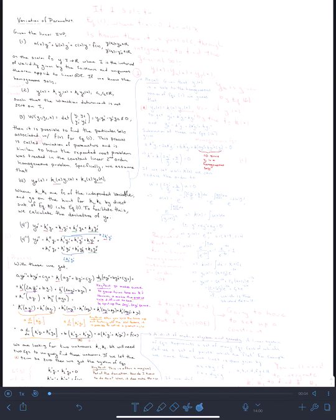Okay, so let's talk about this variation of parameters process. The idea here is that we have this second order ODE which is equation 1. It has variable coefficients and an inhomogeneity given by f of x. What we know is that the homogeneous solution is going to be the sum or the linear combination of two homogeneous solutions y1 and y2.